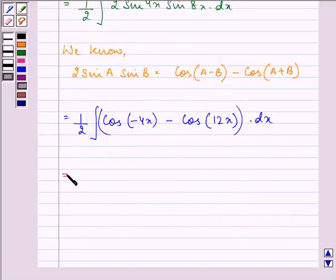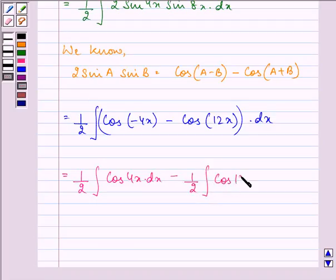Further, it can be written as 1/2 integral of cos 4x dx minus 1/2 integral of cos 12x dx, since cos(-θ) equals cos(θ).